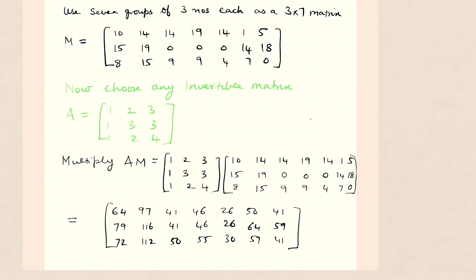It's a very simple matrix A: 1, 2, 3, 1, 3, 3, 1, 2, 4. Now if I send this message directly, it can easily be decoded. So I want to have an encryption system to encode this. So to encode this, the matrix M, we multiply this with a matrix A.